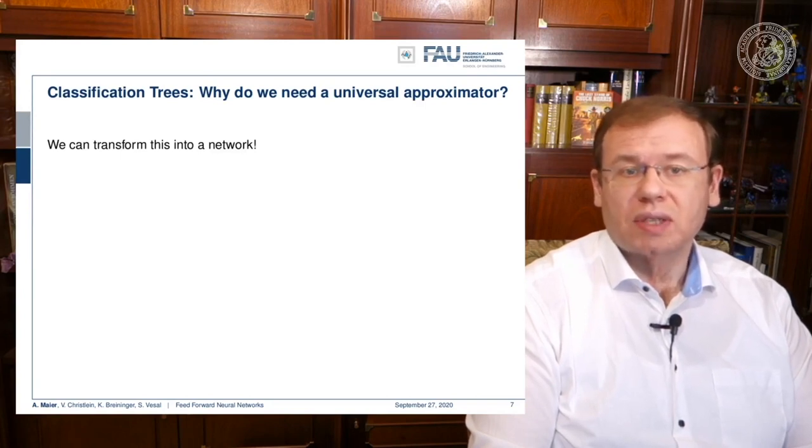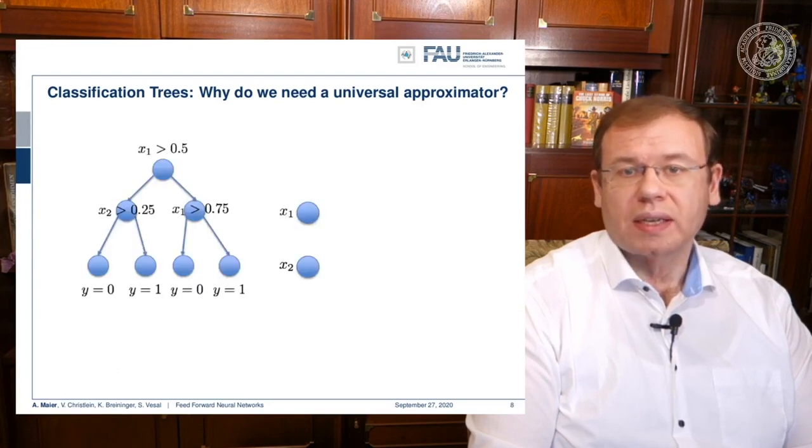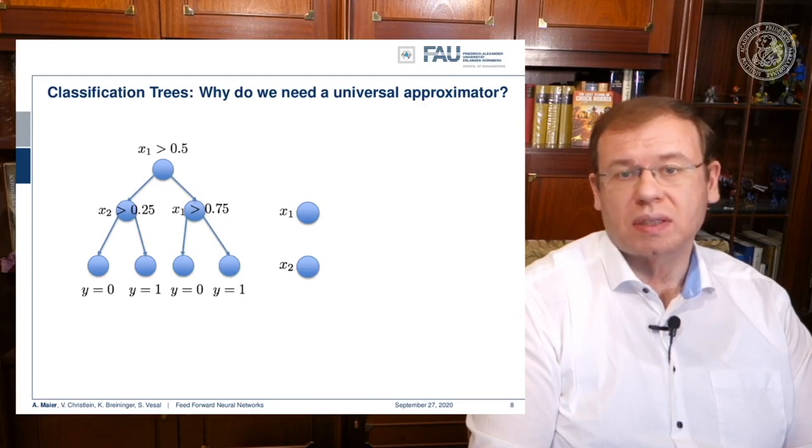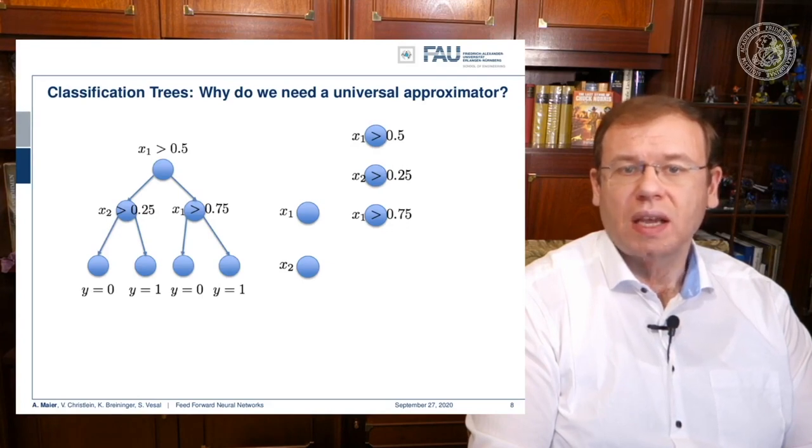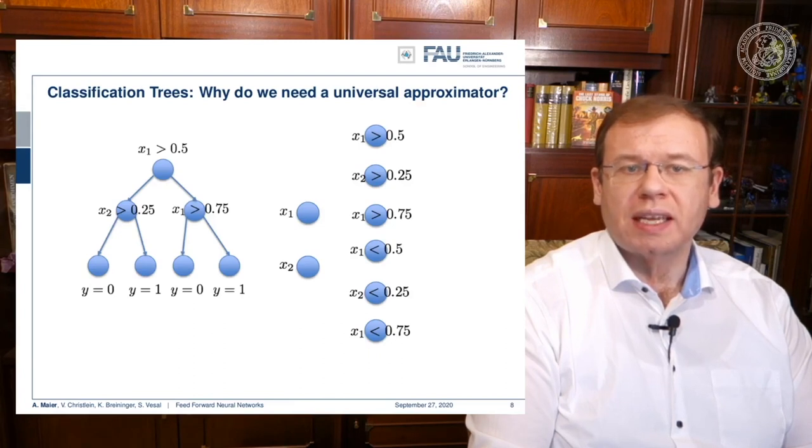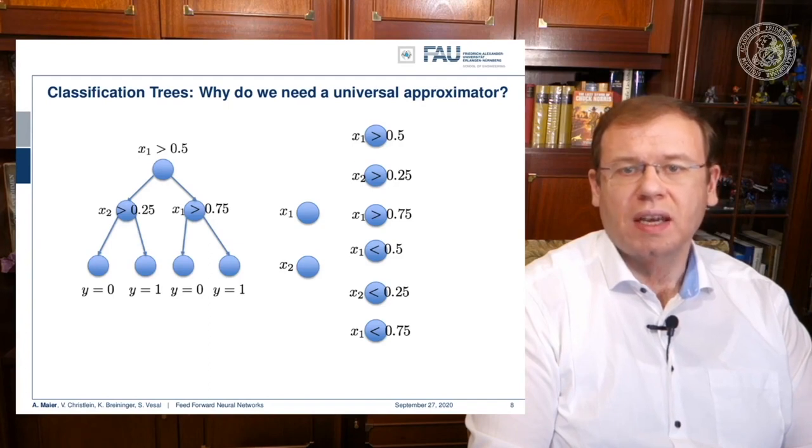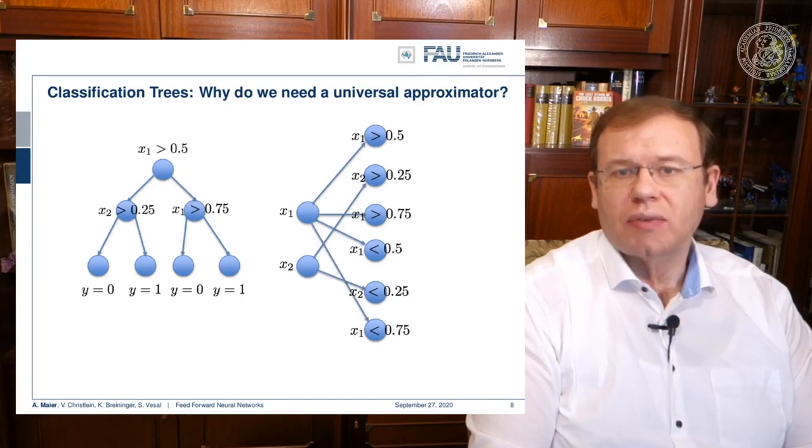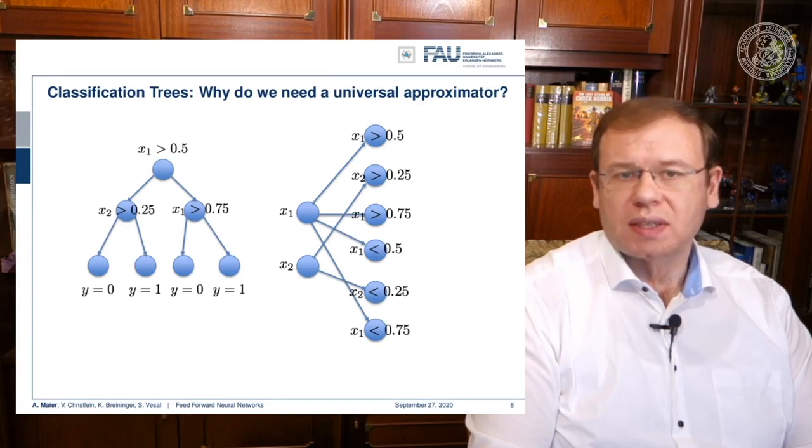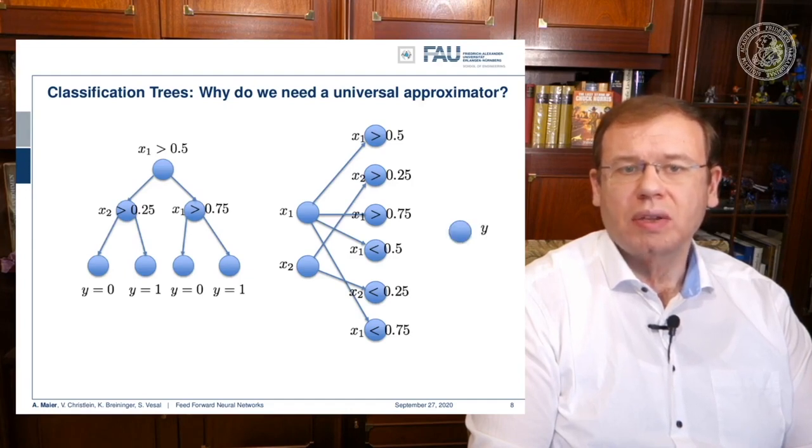This function can be approximated by a universal function approximator. We can transform this into a network. Our network has two input neurons because it's a two-dimensional space. We can adopt this to all the other inner nodes. We can also use the inverse of the nodes and put them in as additional neurons. On the output side, I have to learn some weights using a least square approximation.